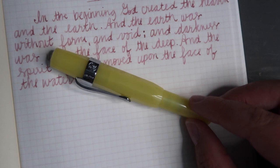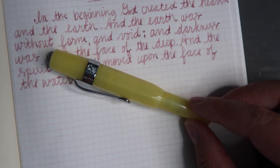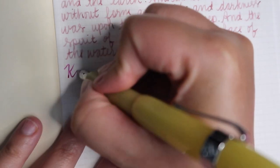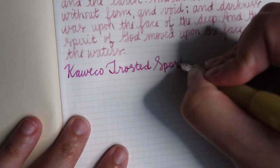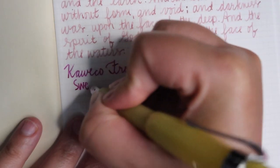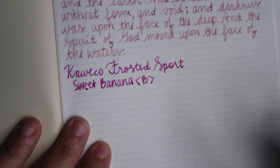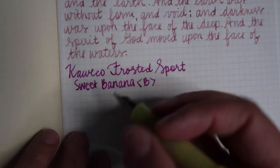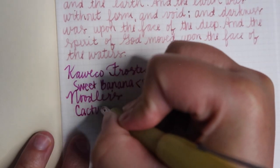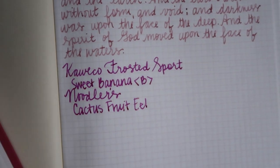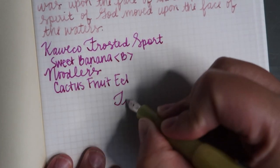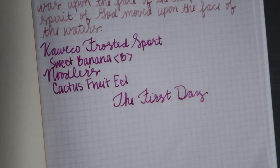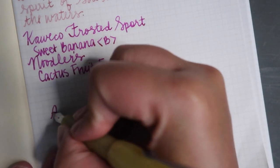This pen here is my Kaweco Frosted Sport in Sweet Banana. This is a broad nib, and the ink is Noodler's Cactus Fruit Eel. The Creation. In the beginning, God created the heaven and the earth, and the earth was without form and void, and darkness was upon the face of the deep, and the Spirit of God moved upon the face of the waters. The First Day.